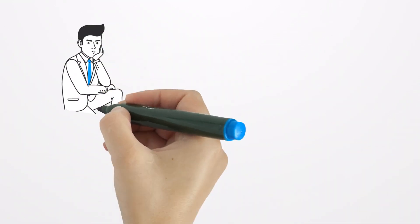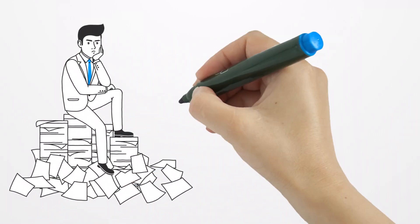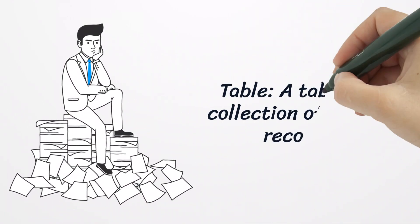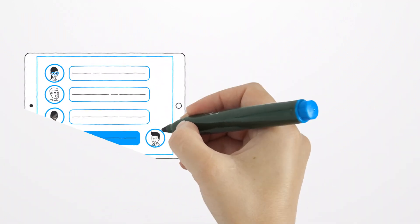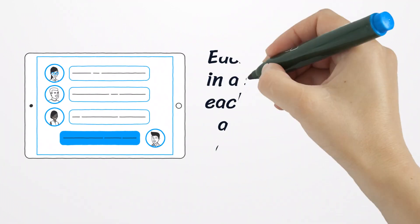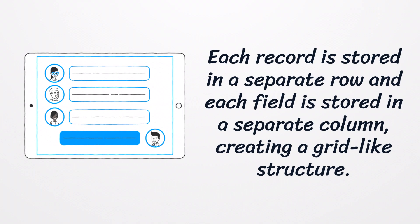Table. A table is a collection of related records. Each record is stored in a separate row and each field is stored in a separate column, creating a grid-like structure.